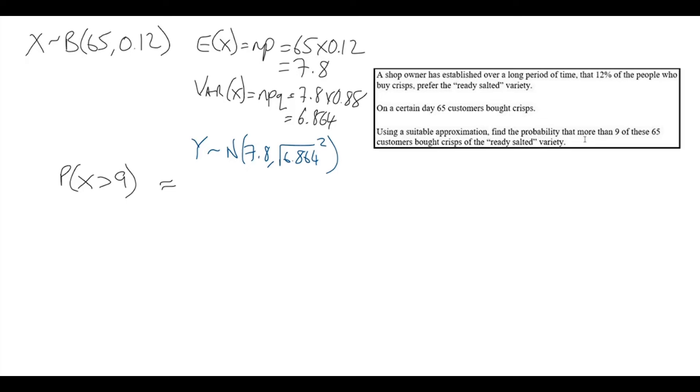But we've got to be careful about the continuity correction as we change this to the continuous normal distribution. So the continuity correction y is going to be greater than 9.5.